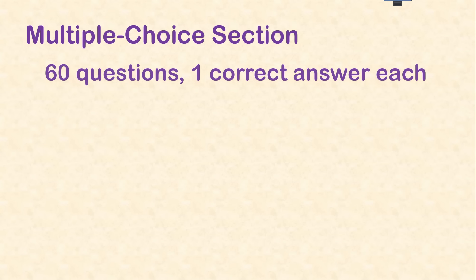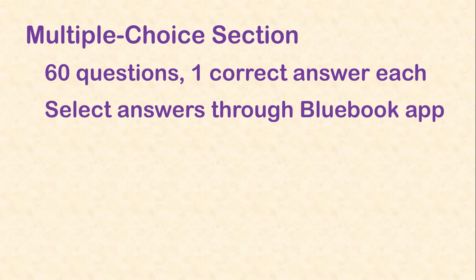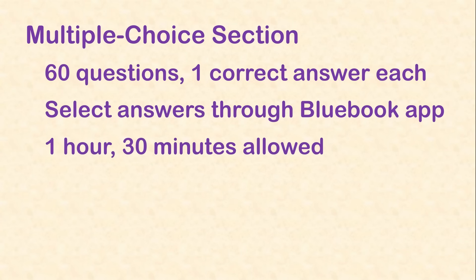Now let's focus on Section 1, the multiple choice part of the exam. Section 1 is completely digital for 2025 — you'll see questions on your screen and click your response in the Blue Book app. Section 1 has 60 multiple choice questions with four answer choices each, and each question has one best answer. You'll be given scratch paper to work out problems, but all answers must be selected on screen. You'll have 90 minutes to answer the 60 questions.